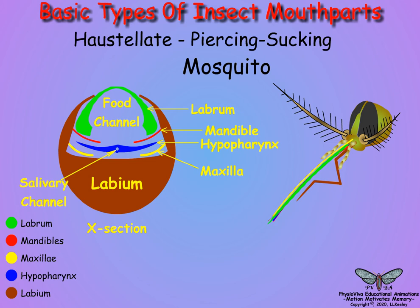During feeding, it is only the stylets that enter the host, with the labium folded up or back on the exterior of the host.